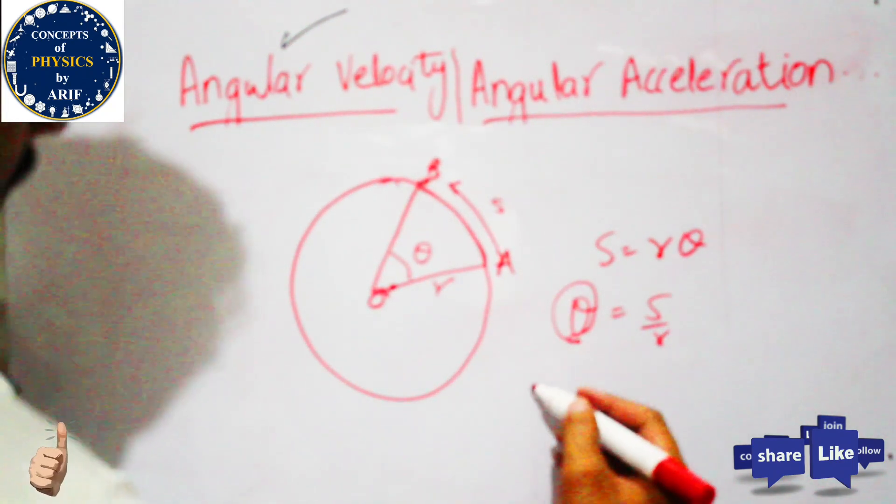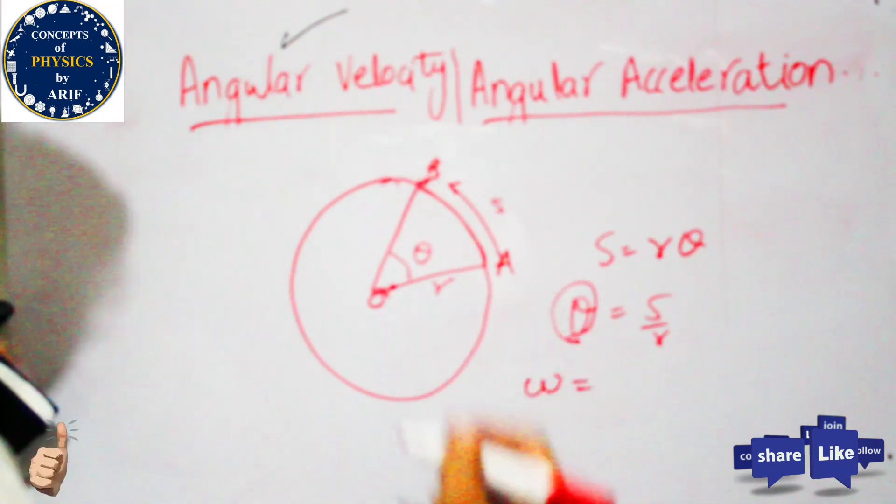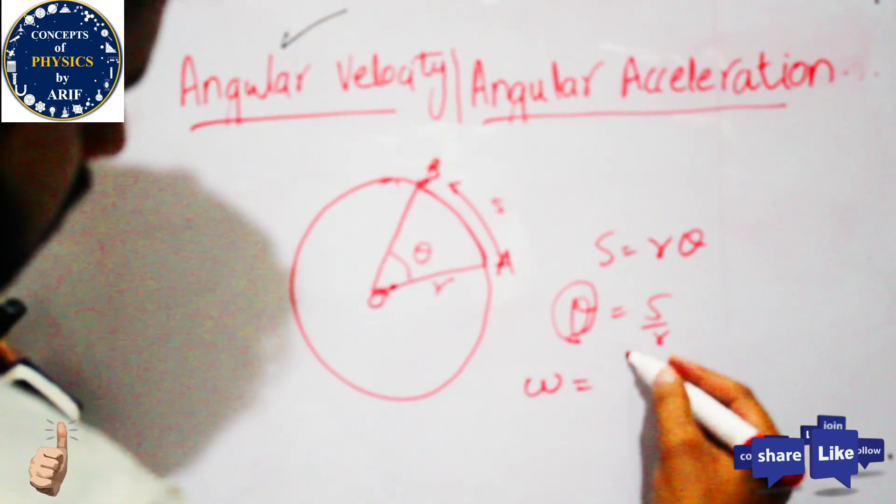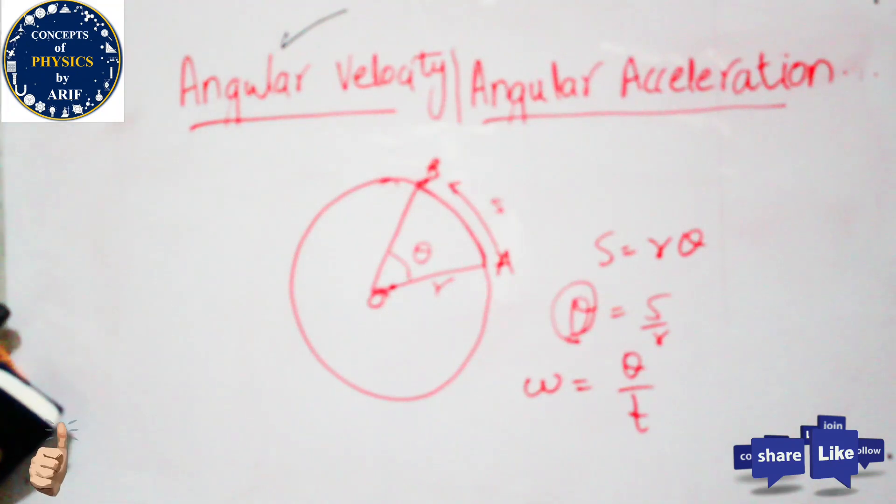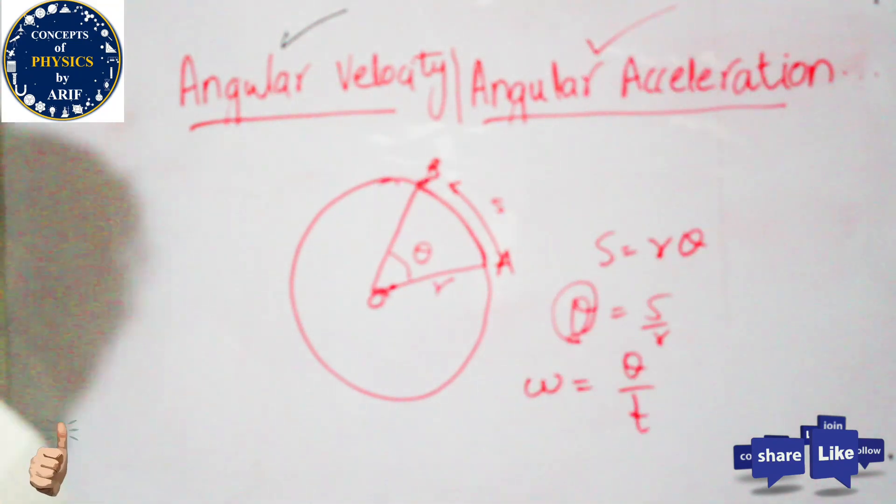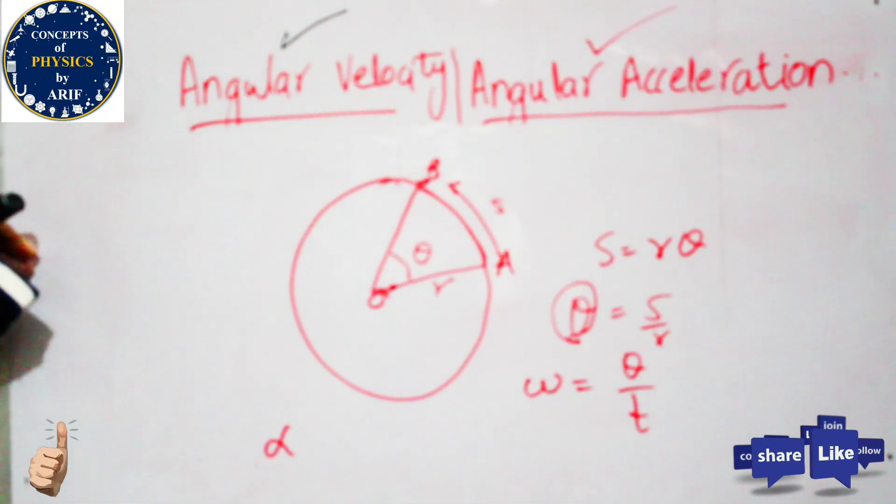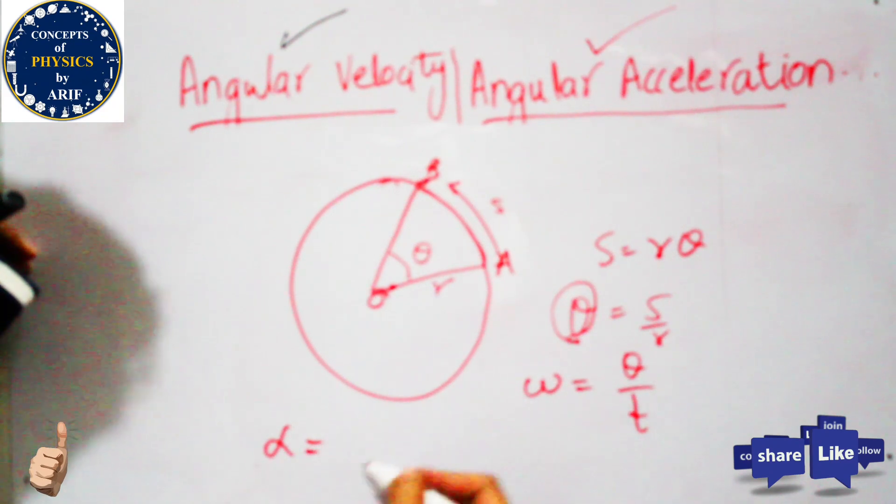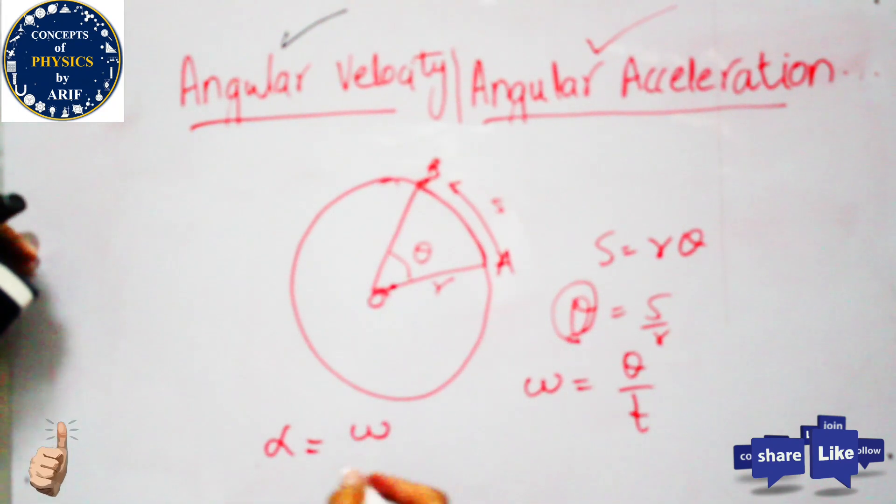If we want to calculate angular velocity, it is the time rate of change of angular displacement. So theta over t is angular velocity. For angular acceleration, denoted as alpha, it is the time rate of change of angular velocity with respect to time.